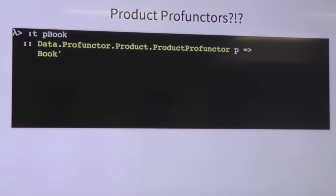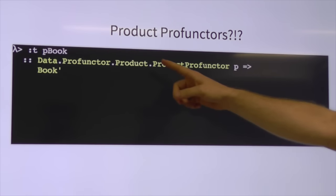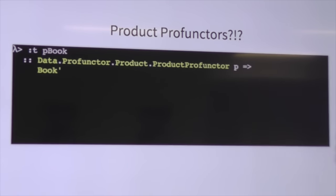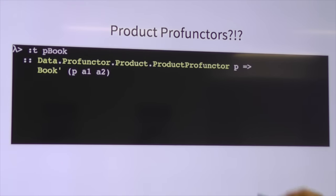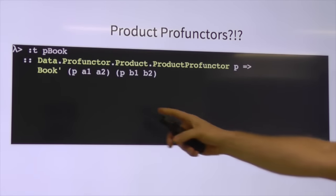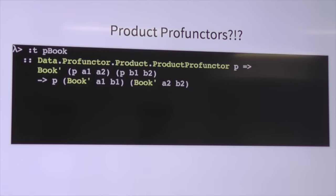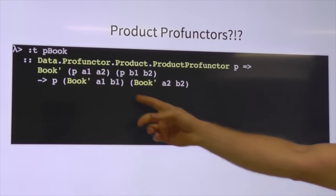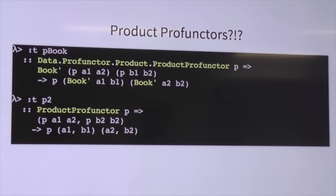So what is this product profunctor? If we look at our `pBook`, it's this weird thing — it's a `P` which is a product profunctor, and then we've got our `Book`. This `Book` takes two transformations: a profunctor from `A1` to `A2`, `B1` to `B2`, and returns a profunctor of `Book A1 B1` to `Book A2 B2`. That's a tiny bit weird, and the tuple version is exactly the same except it has tuples in each spot.